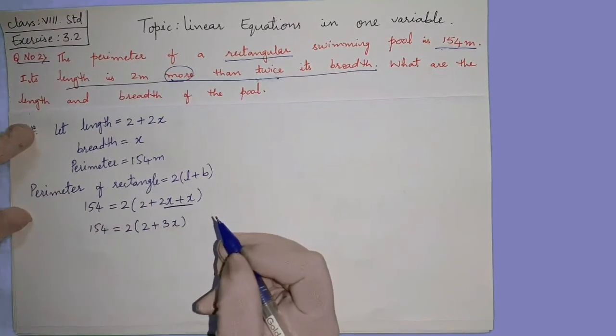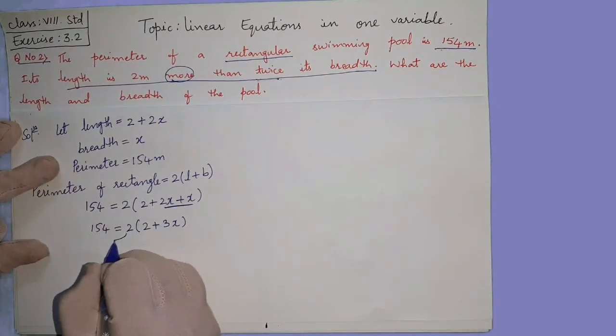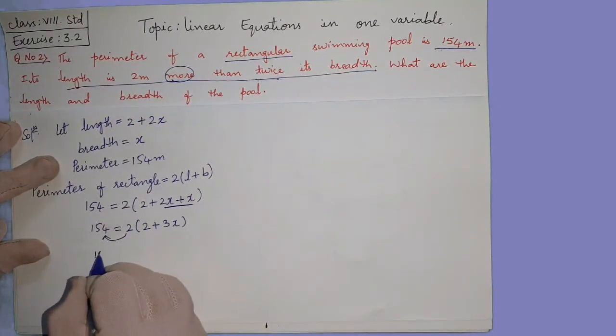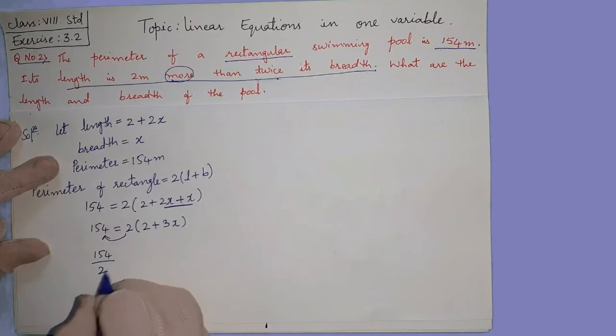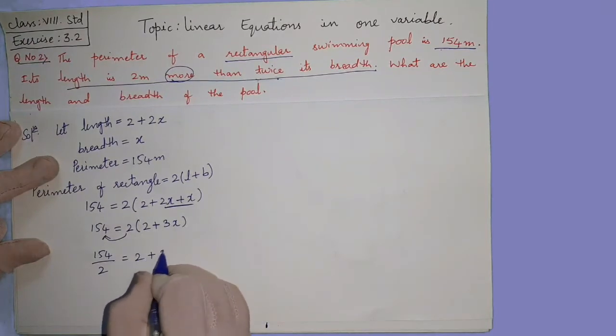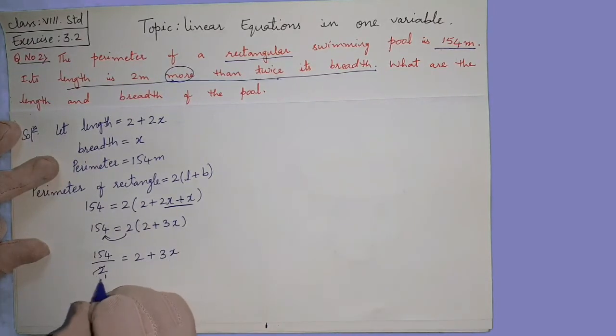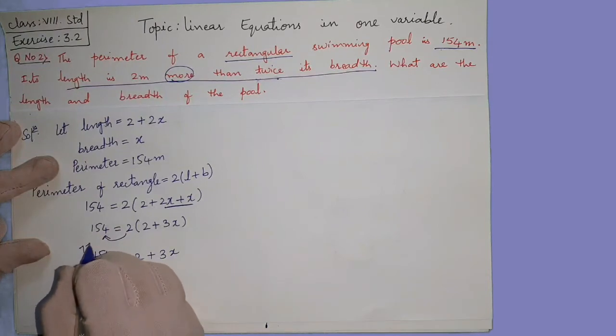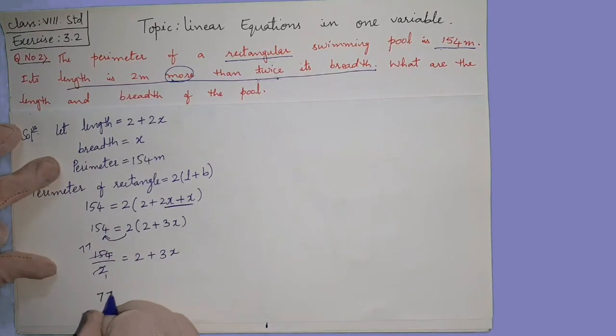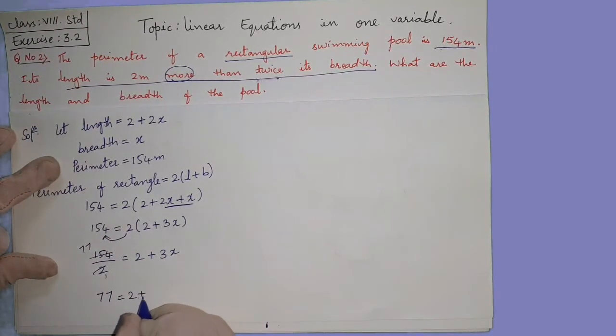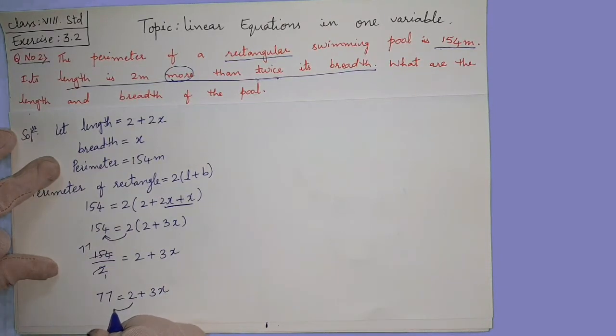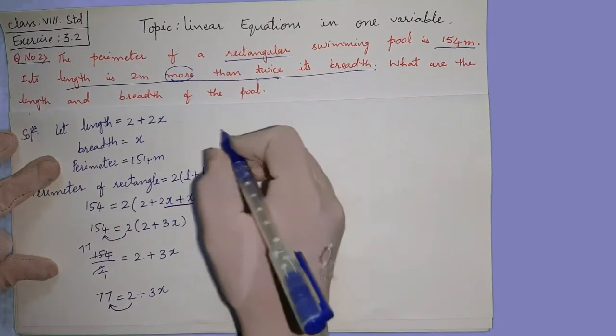Now this 2 we transpose, so it will become 154 divided by 2 is equal to 2 plus 3x. 2 ones are 2, 2 sevens are 14. 77 is equal to 2 plus 3x. Now these 2 also we are shifting, shifting matlab transpose.